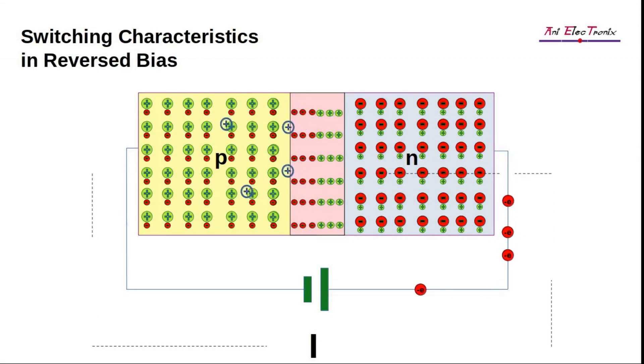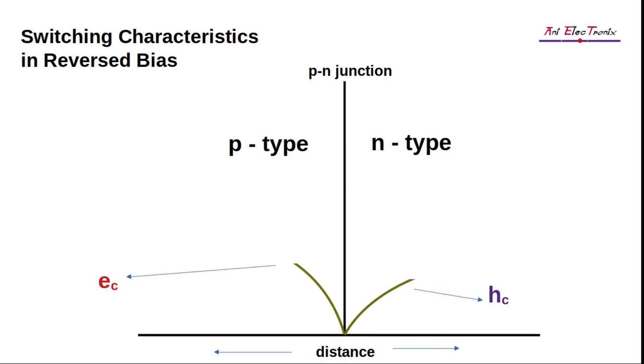A reverse saturation current occurs during reverse bias conditions when minority carriers in depletion regions contribute to the current flow. Therefore, minority carrier concentration is negligible at the junction and increases as it moves away from the junction.